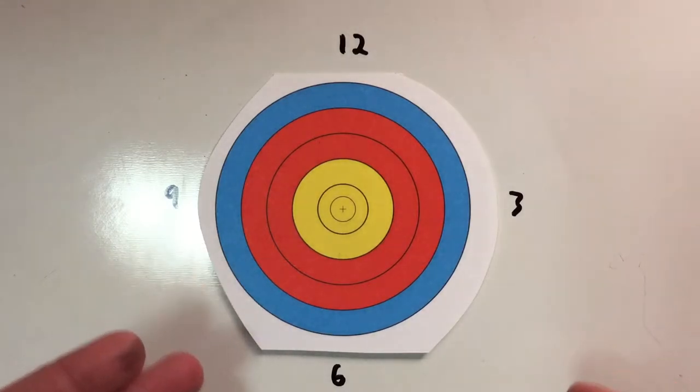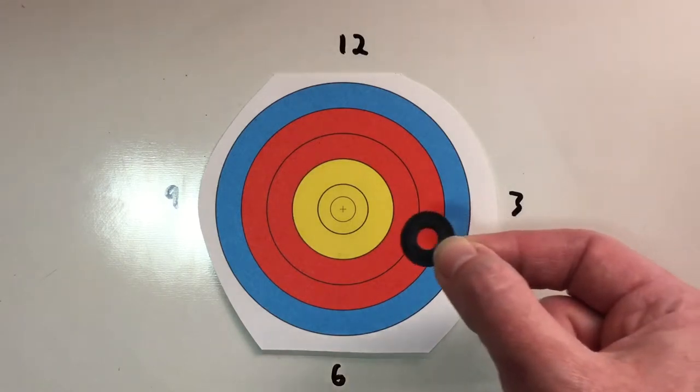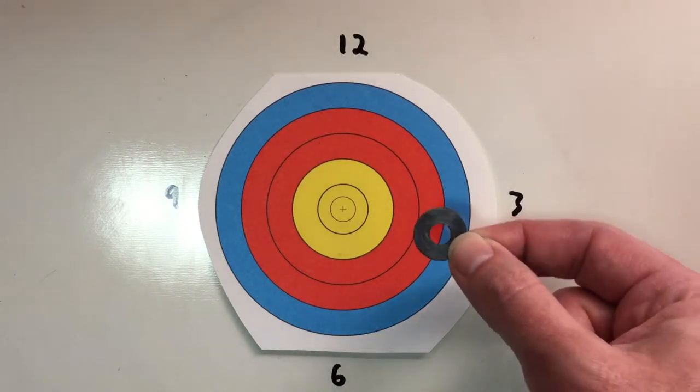Let's say this target represents your target at 60, 70, 18 meters, whatever distance you shoot, and this aperture, this little ring here, represents your aperture.